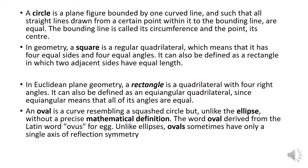A square is a regular quadrilateral, which means that it has four equal sides and four equal angles. It can also be defined as a rectangle in which two adjacent sides have equal length.